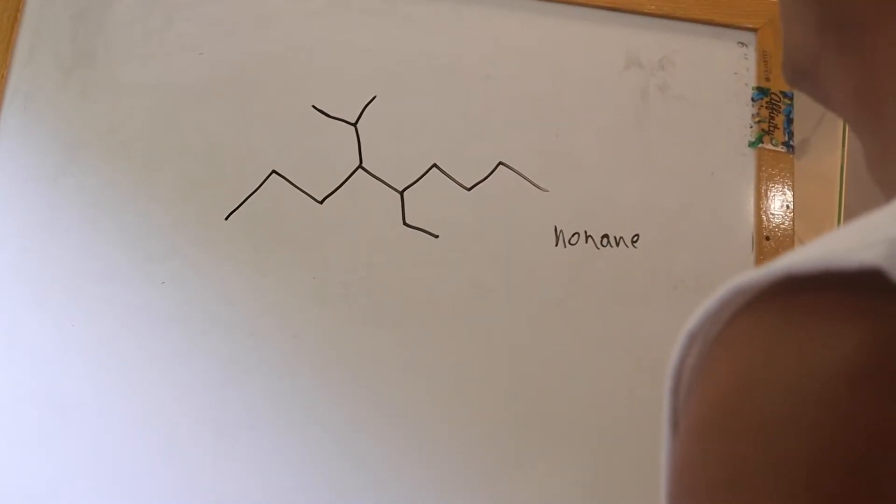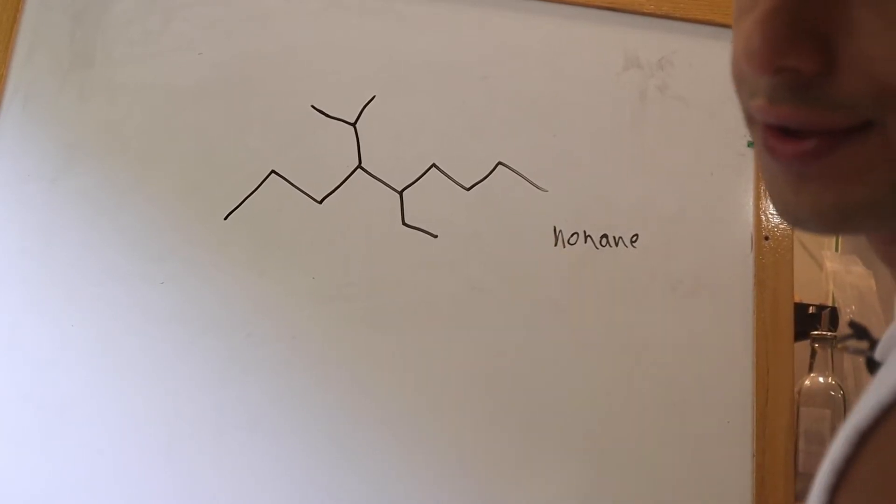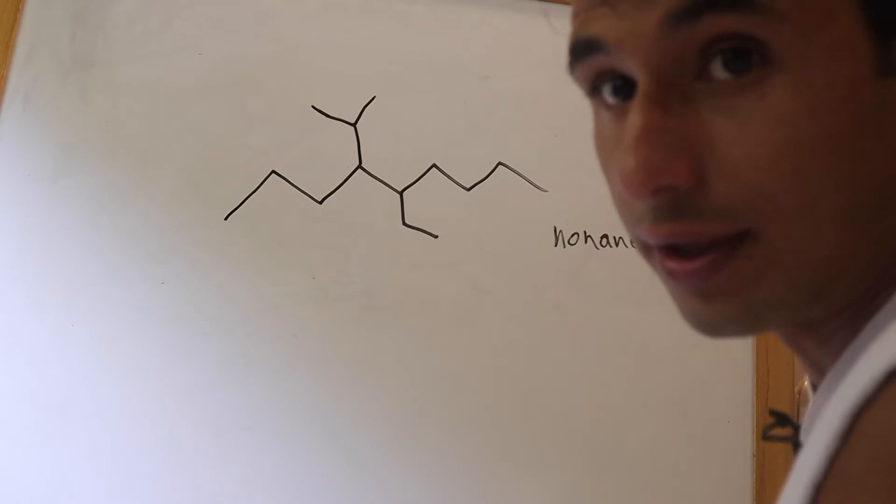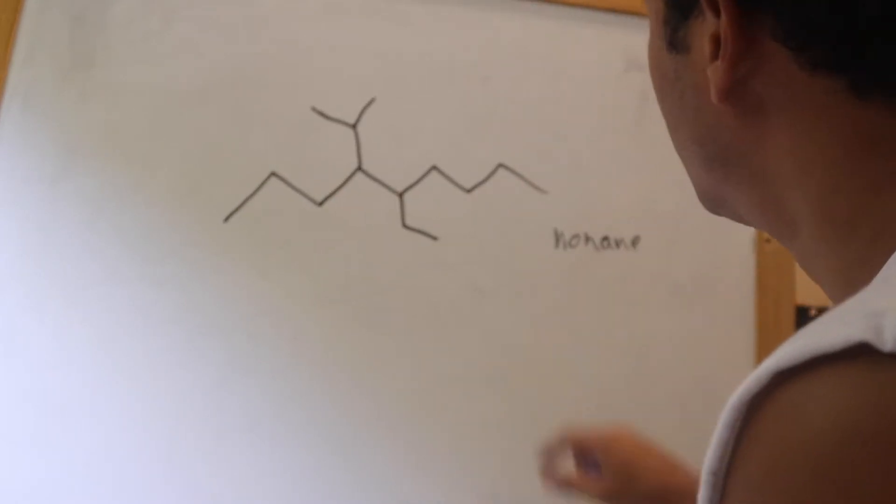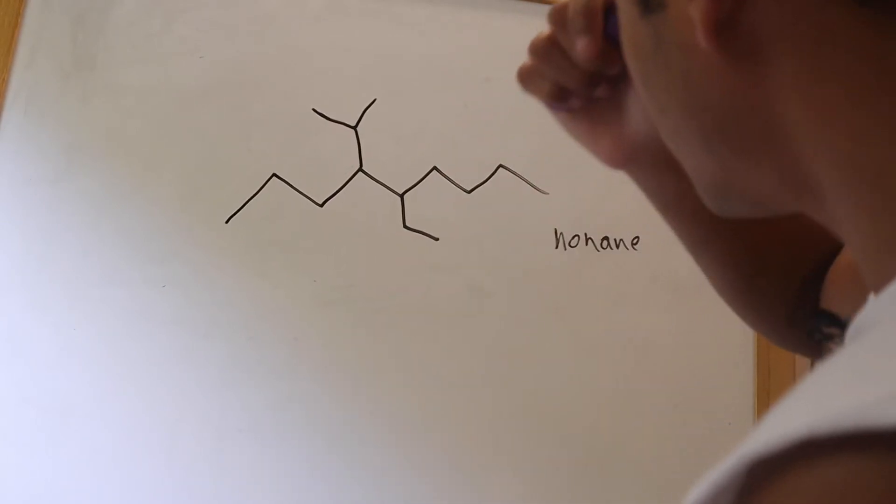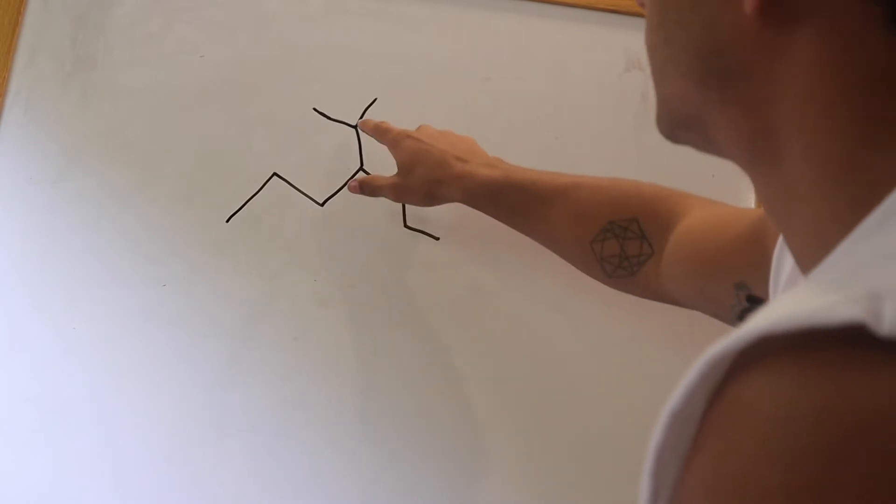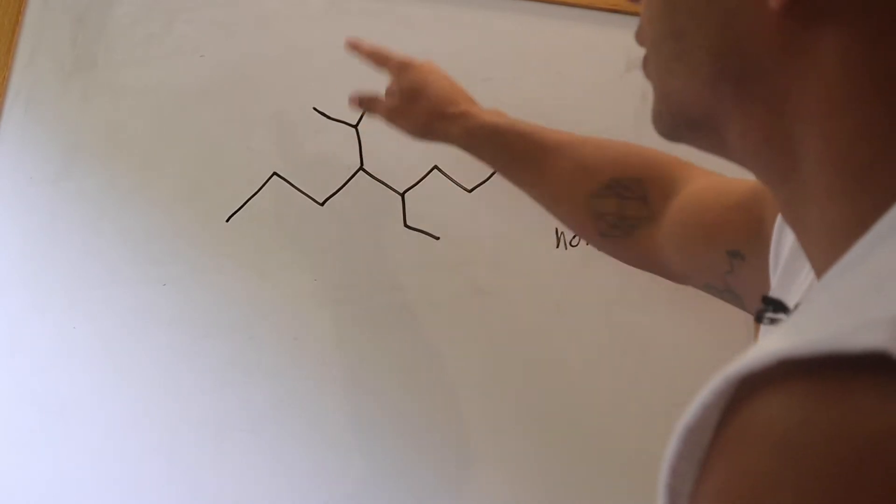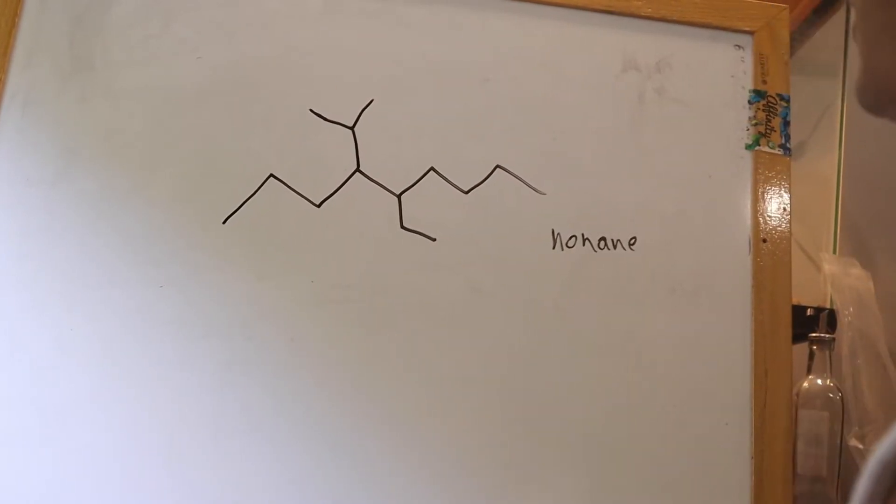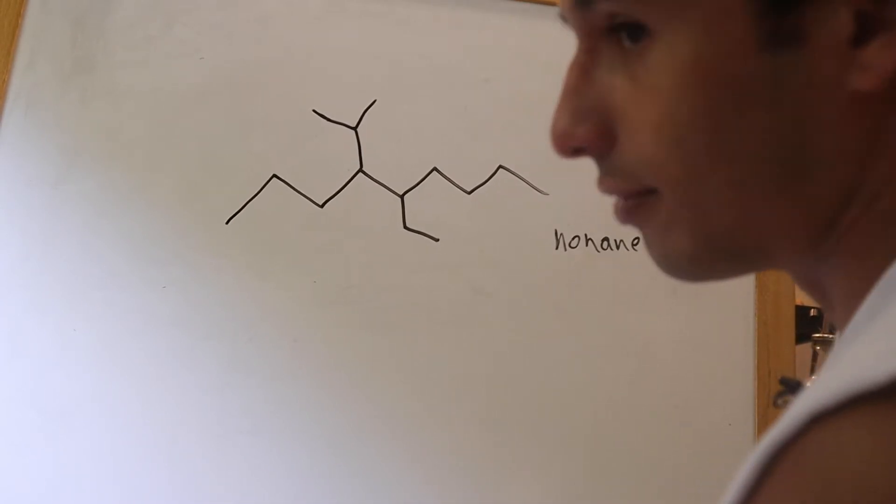Now next thing we want to do is figure out how to number this. So in alphabetical order, we're going to look at the functional groups. We have an ethyl group here, a CH2 bonded to a CH3. And then we have here an isopropyl group, so that's going to be a CH bonded to two CH3s. So this isopropyl and ethyl, E comes before I.